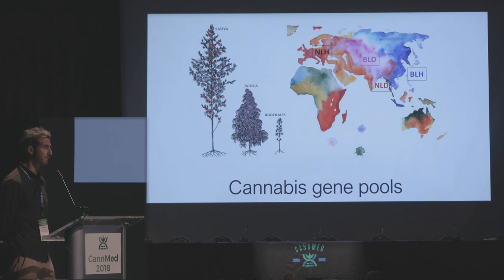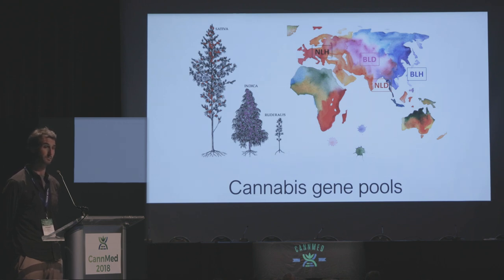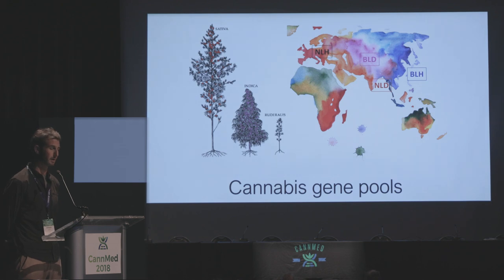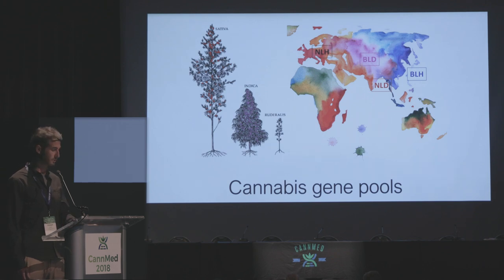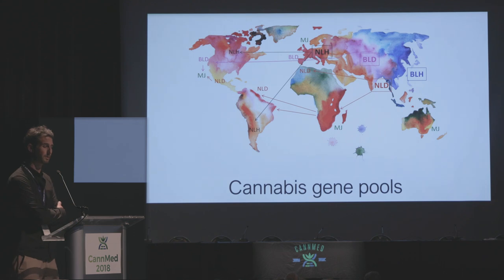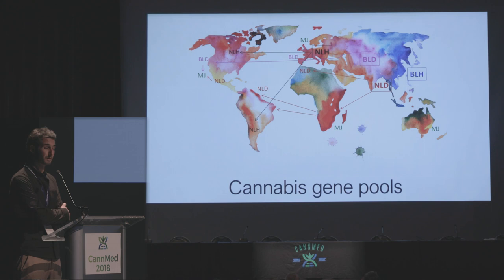So you see narrow-leaf hemp (NLH) in Europe, the broad-leaf drug type, and the narrow-leaf drug type — those would be the indica and sativa of the recreational or medical market — and then broad-leaf hemp, more thought of as Chinese hemp. These would be a primer of where the plants emerged and evolved. As we know, it's moved around the world, and there are hybrids between most likely all of those gene pools at this point.